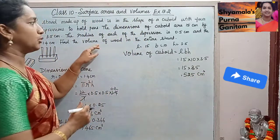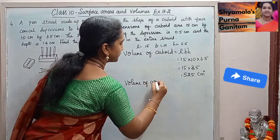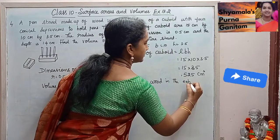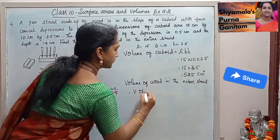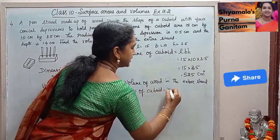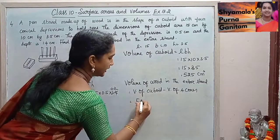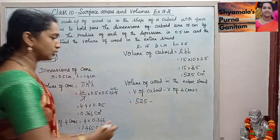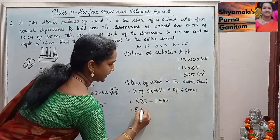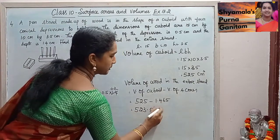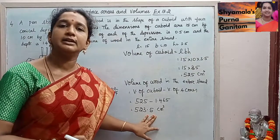So now we will find the volume of the wood in the entire stand. Volume of wood in the entire stand is equal to volume of cuboid minus volume of 4 cones — that is 525 minus 1.465 — so when we subtract both we will get approximately 523.5 cm cube. This is the volume of the wood.